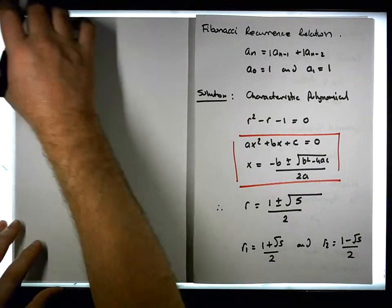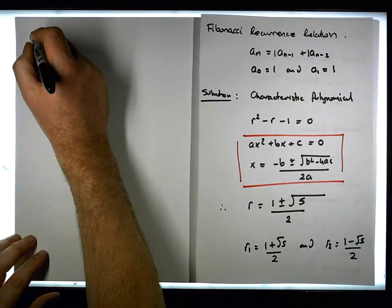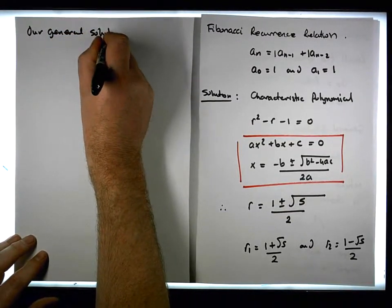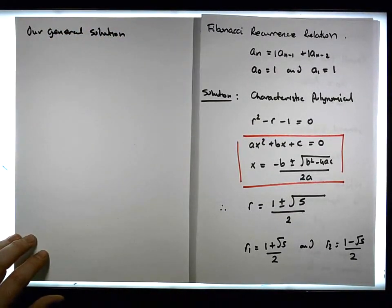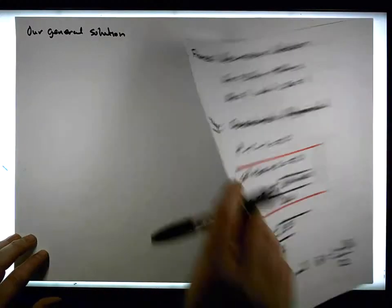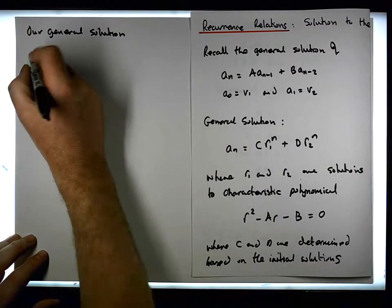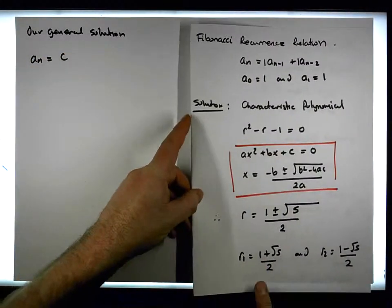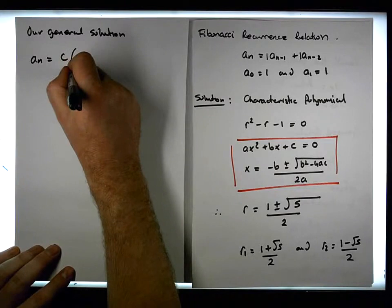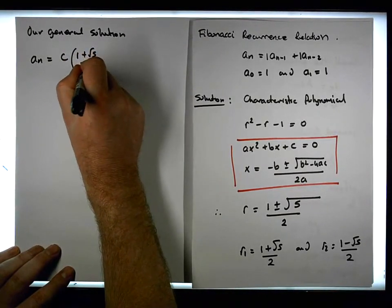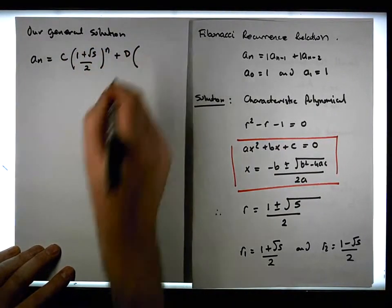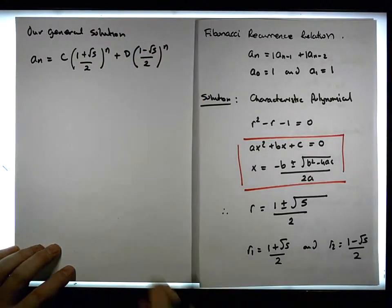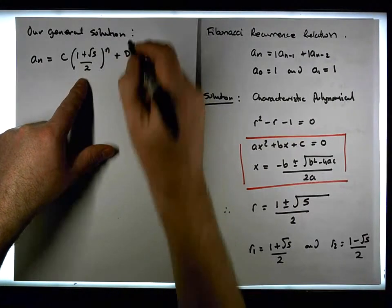Our general solution is basically: a_n is equal to some constant c times r1, which is (1 + √5)/2, raised to the power of n, plus some other constant d times r2, which is (1 - √5)/2, raised to the power of n. So our general solution looks something like this.